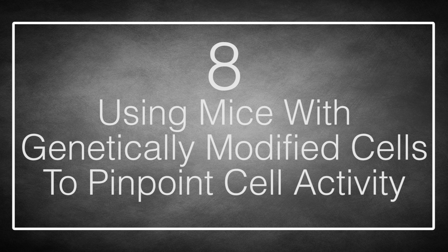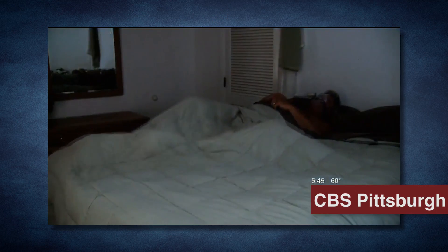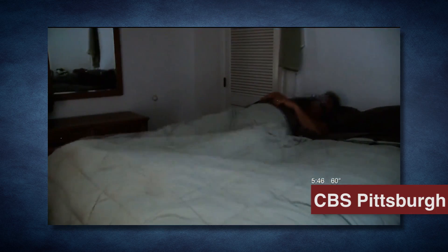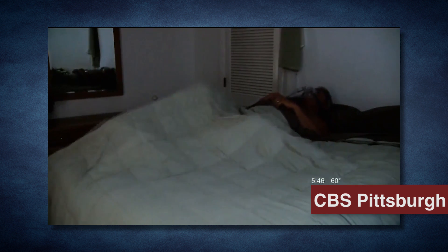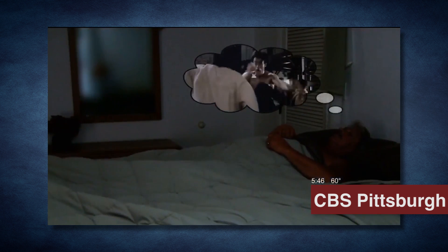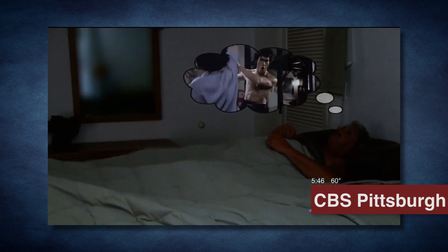Number 8: Using Mice with Genetically Modified Cells to Pinpoint Cell Activity. RBD, short for REM Behavioral Disorder, is a relatively little known sleep dysfunction where you act out, often violently, while you are in the most important stage of sleep. Normally, REM sleep is when your body really locks down and most people don't move or do little more than twitch. However, people with RBD will often move very physically while in REM, sometimes hurting the person they are sleeping with or hurting themselves by jumping or falling out of bed.